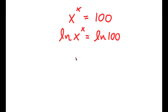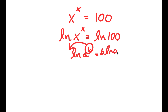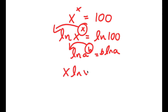Now, if I have something in the form ln a to the power of b, I can move b to the front. So this is going to equal b times ln a. So for ln x to the power of x, I can move x to the front, and I get x times ln x is equal to ln 100.